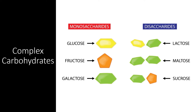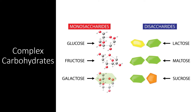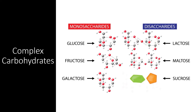Carbohydrates most commonly serve roles as fuel and building materials for a cell. The simplest carbohydrates, called monosaccharides, are hydrocarbon rings of five or six carbons — glucose, for instance, serves as the main fuel molecule for cells. Carbohydrates made with two monosaccharides are called disaccharides; some organisms store disaccharides instead of monosaccharides for the sake of efficiency.